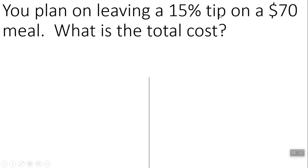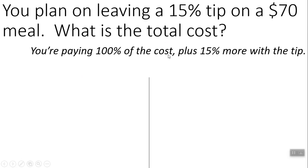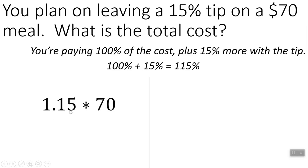You plan on leaving a 15% tip on a $70 meal. What's the total cost? On this question they're not asking for just the tip amount — you need to pay the cost plus the tip. We can think of this as paying 100% of the cost plus 15% for the tip, so that's 115% of 70. You could go 1.15 — because that's 115% as a decimal — times 70, and you get a total cost of $80.50.